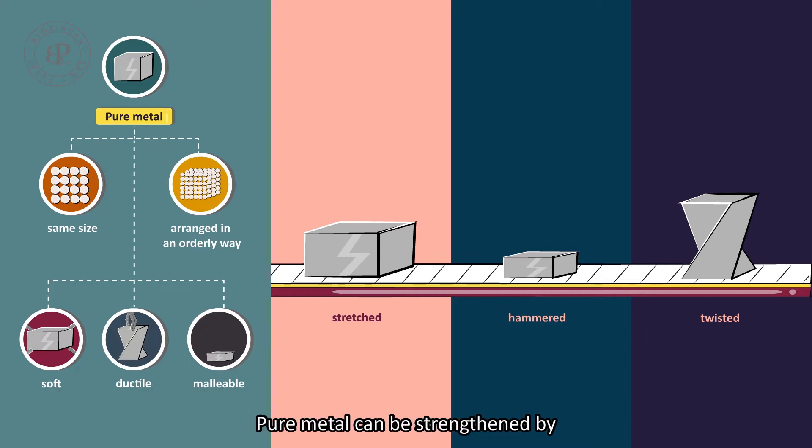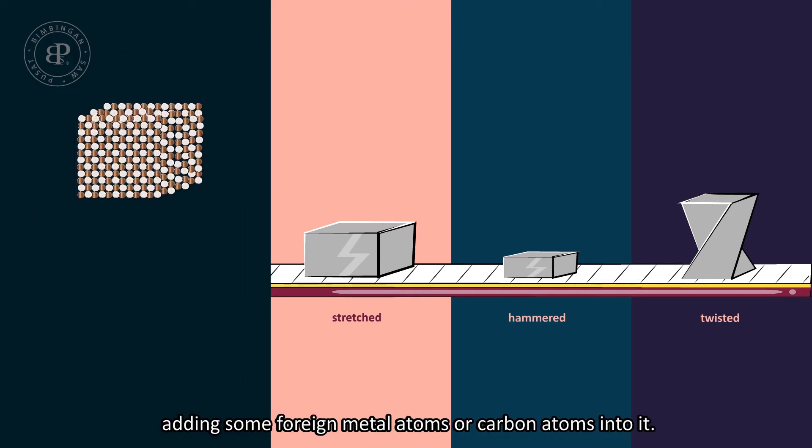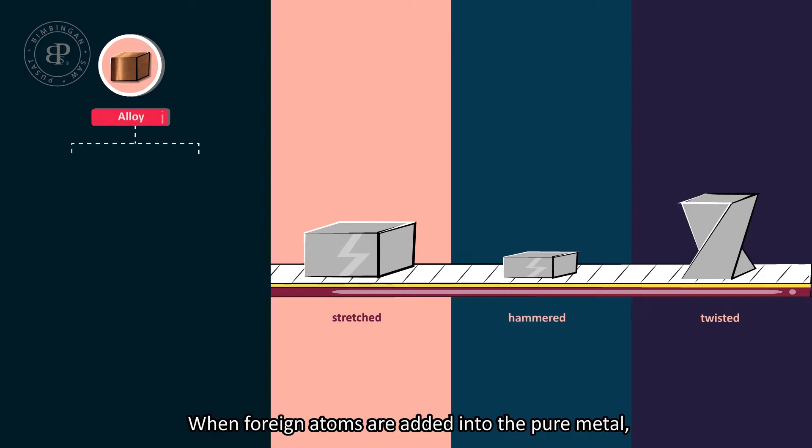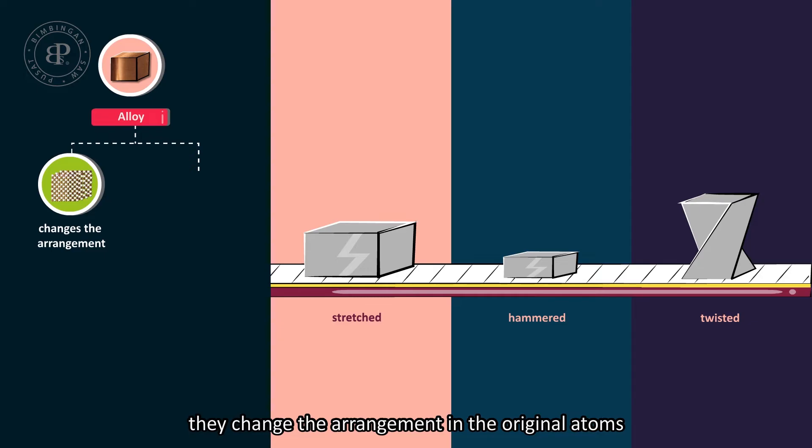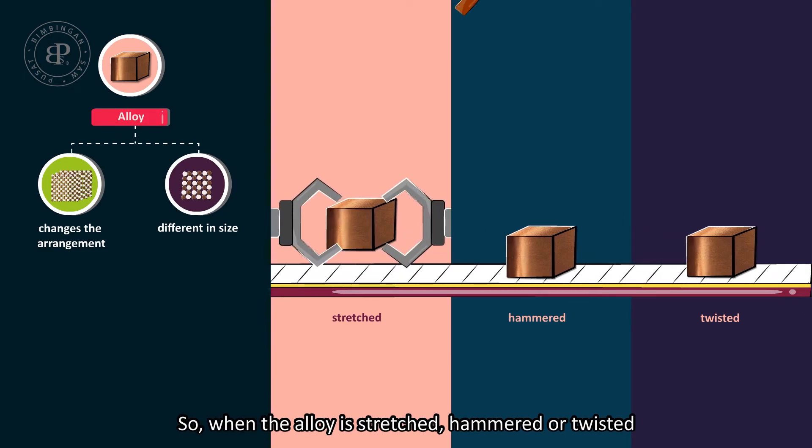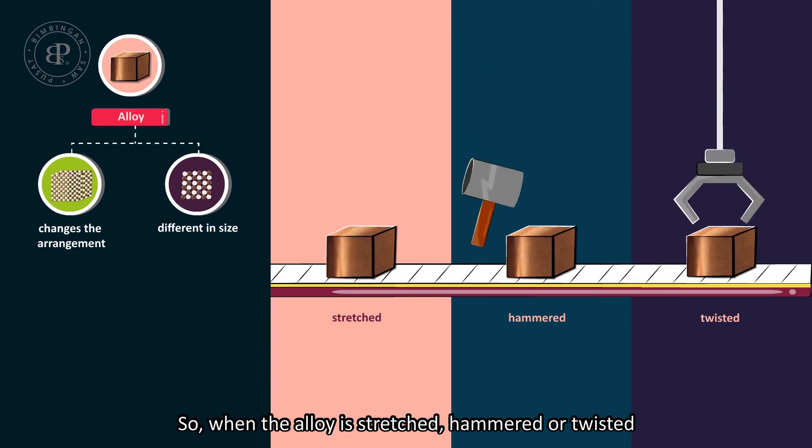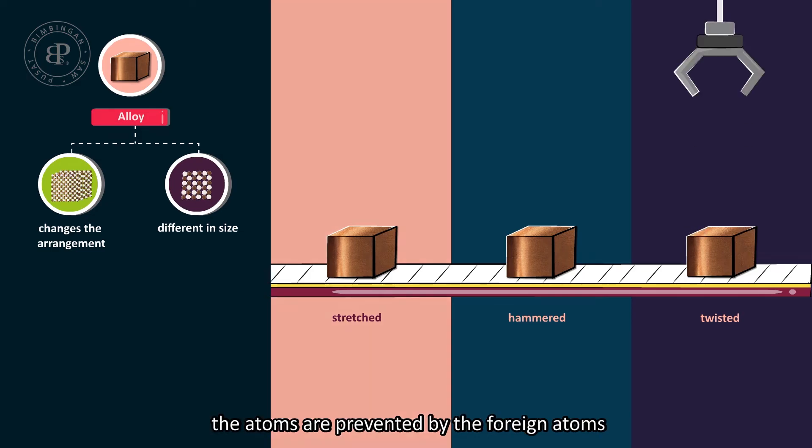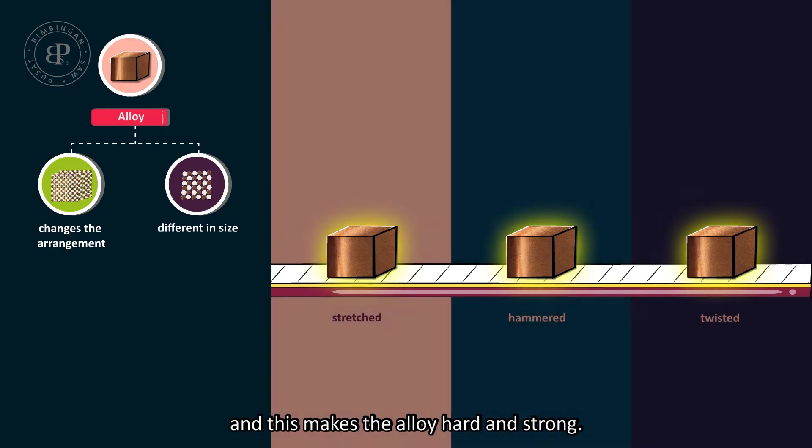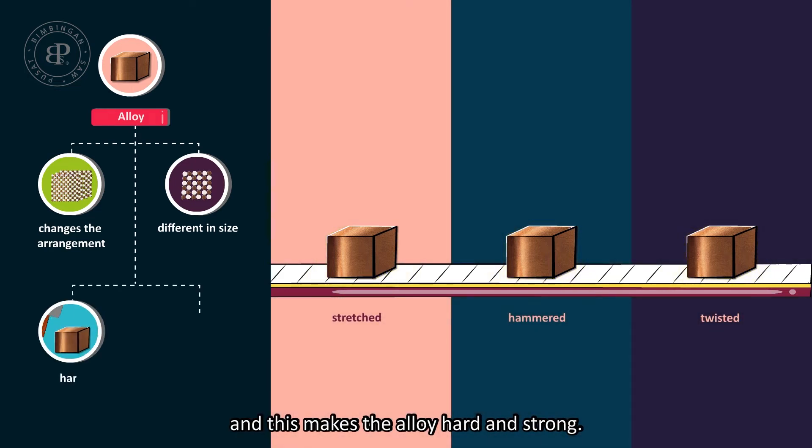Pure metal can be strengthened by adding some foreign metal atoms or carbon atoms into it. When foreign atoms are added into the pure metal, they change the arrangement in the original atoms as they are different in size. So when the alloy is stretched, hammered or twisted, the atoms are prevented by the foreign atoms from sliding over one another and this makes the alloy hard and strong.